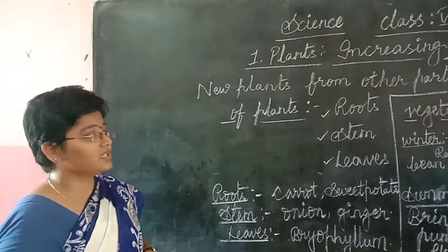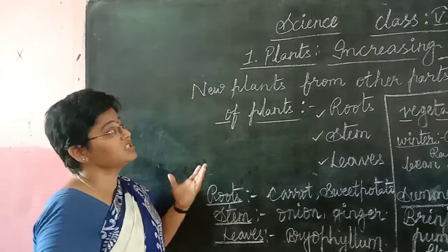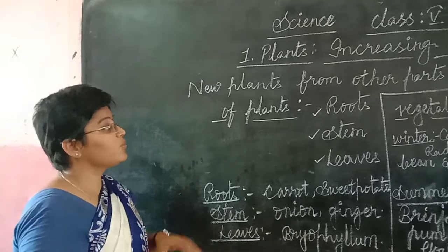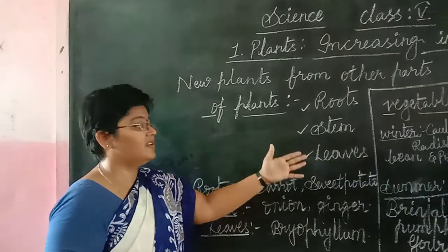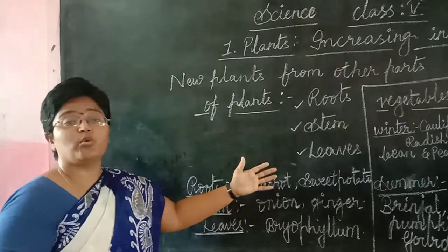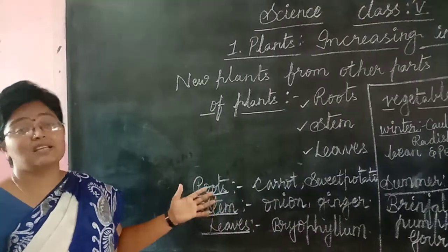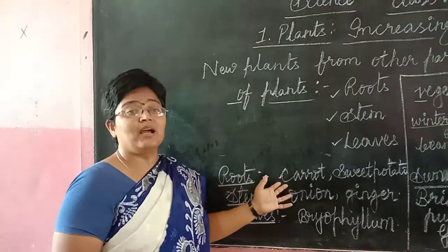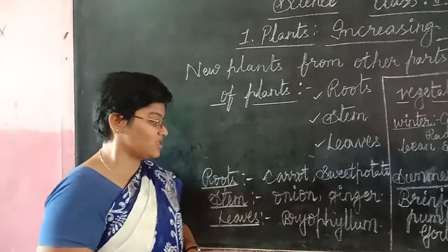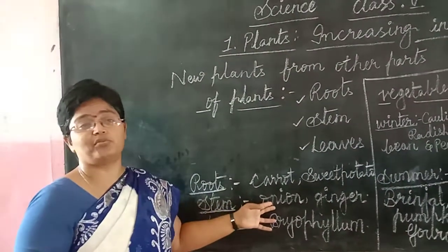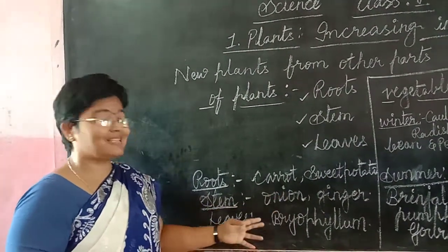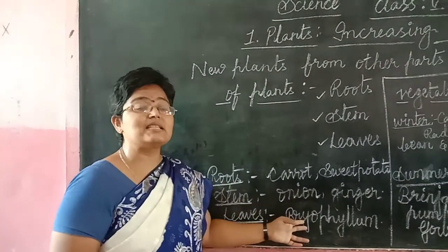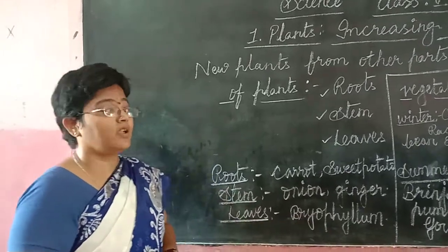So let us know more about this in our chapter, which is about plants producing or increasing in number. We have seen that roots, stems, and leaves are the foremost parts of the plant which form new plants. Examples include roots from carrot and sweet potato, stems in the form of onion and ginger, and leaves in the case of Bryophyllum.